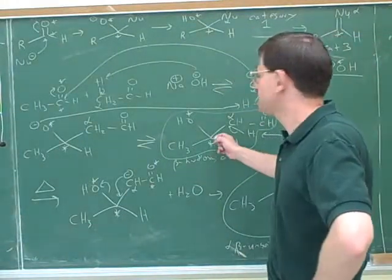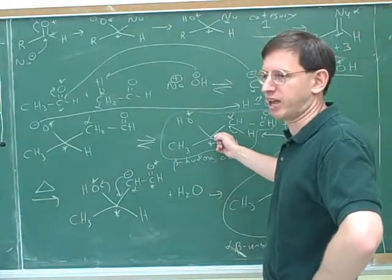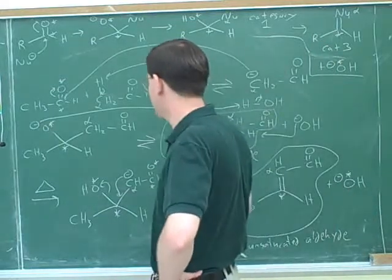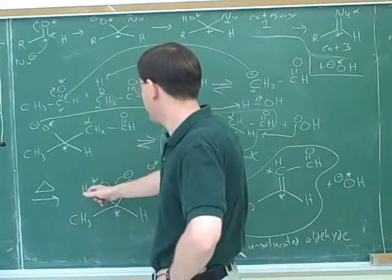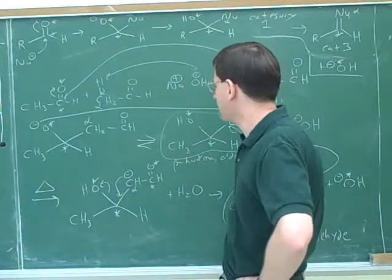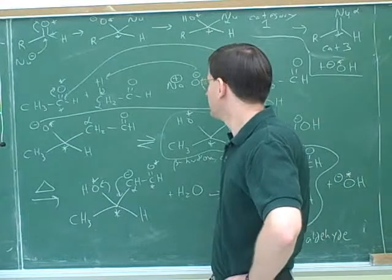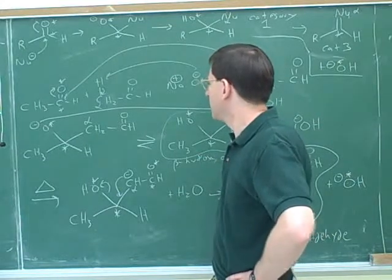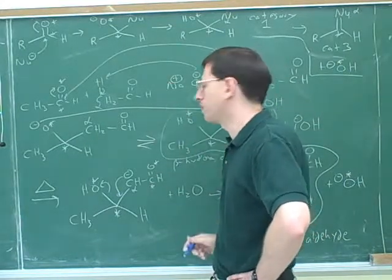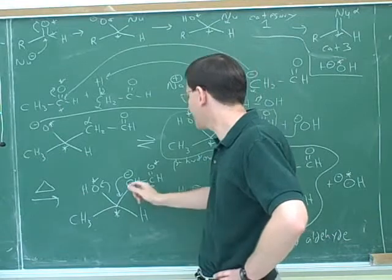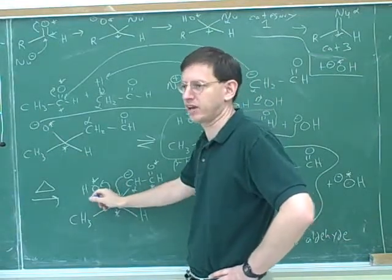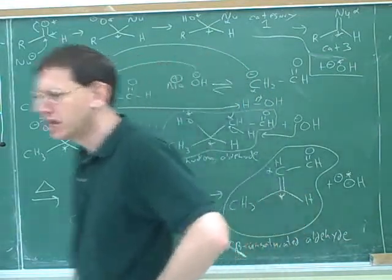You didn't actually have much trouble with the first step of the mechanism, the category one, but the category three aspect usually gives people trouble. The key thing is it's actually very logical. In order to get the first attack, we have to deprotonate the alpha carbon. So in order to get the second attack, we deprotonate the alpha carbon again, and then it simply attacks and kicks off the oxygen.